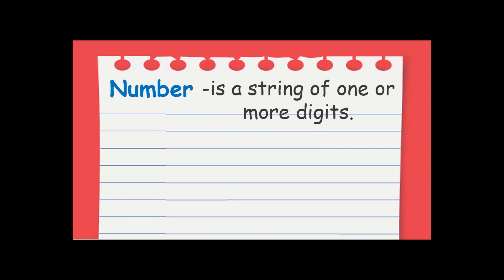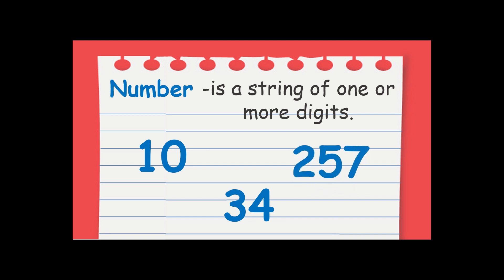Now, what is a number? When we say number, it is a string of 1 or more digits — a combination of 1 or more digits. For example, 10 is a combination of digit 1 and digit 0, so it is called a number. 34 — digit 3 and digit 4 combined — is a number. 257 is a number; it's a combination of digit 2, digit 5, and digit 7. So when we say number, it is digits put together.